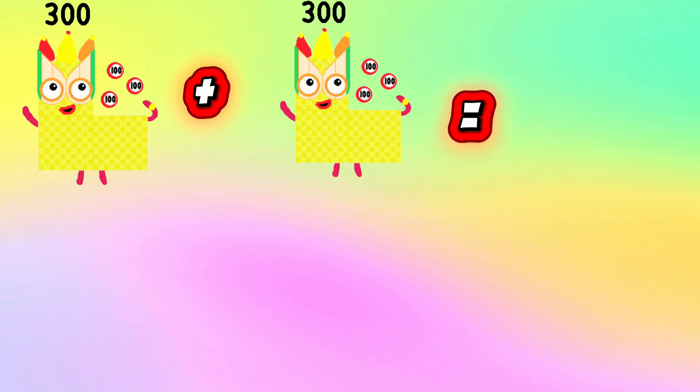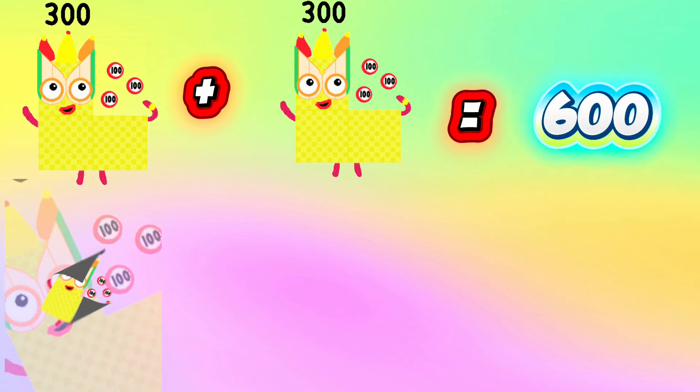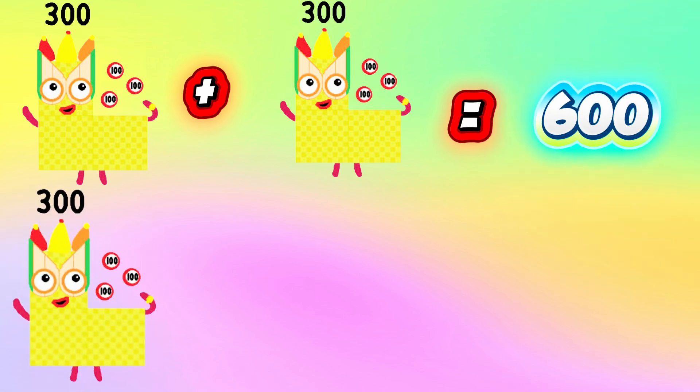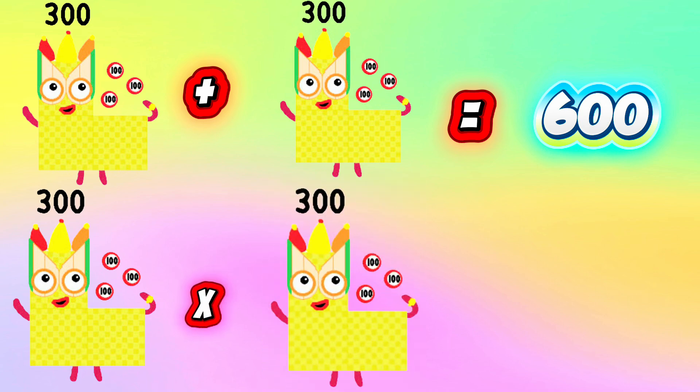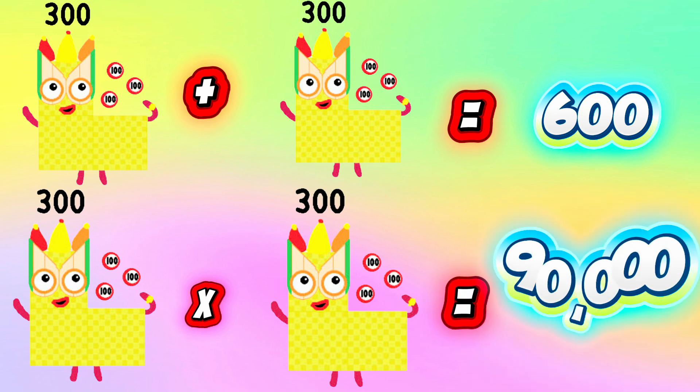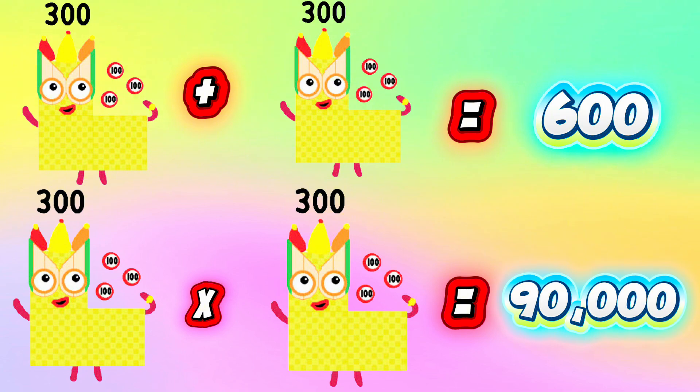Let's try another example. 300 plus 300 equals 600. In multiplication, 300 multiplied by 300 equals 90,000.